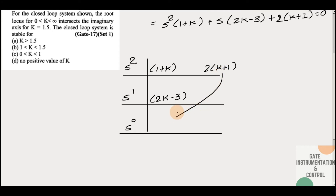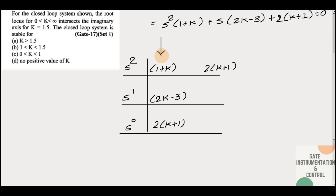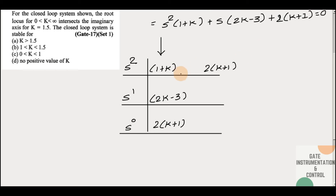In the Routh table, the value that directly follows is 2(k+1). For stability, the first column of the Routh table must have all elements with the same sign. Taking the first element: (1 + k) should be greater than zero, which gives k > -1. This is our first condition.